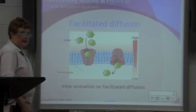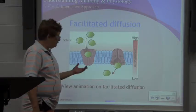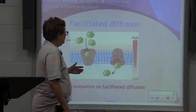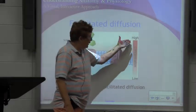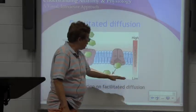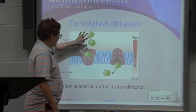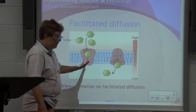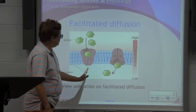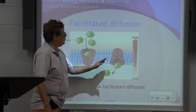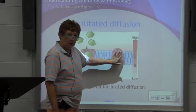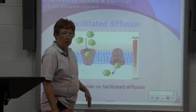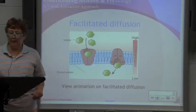Facilitated diffusion, as we talked about — one example is insulin. What happens is from high concentration to low concentration, whatever the solute is, it can't get through on its own. It's not the right shape; it can't pass through the protein, so it picks up a carrier, which changes its shape and makes it able to go through. That is facilitated diffusion.